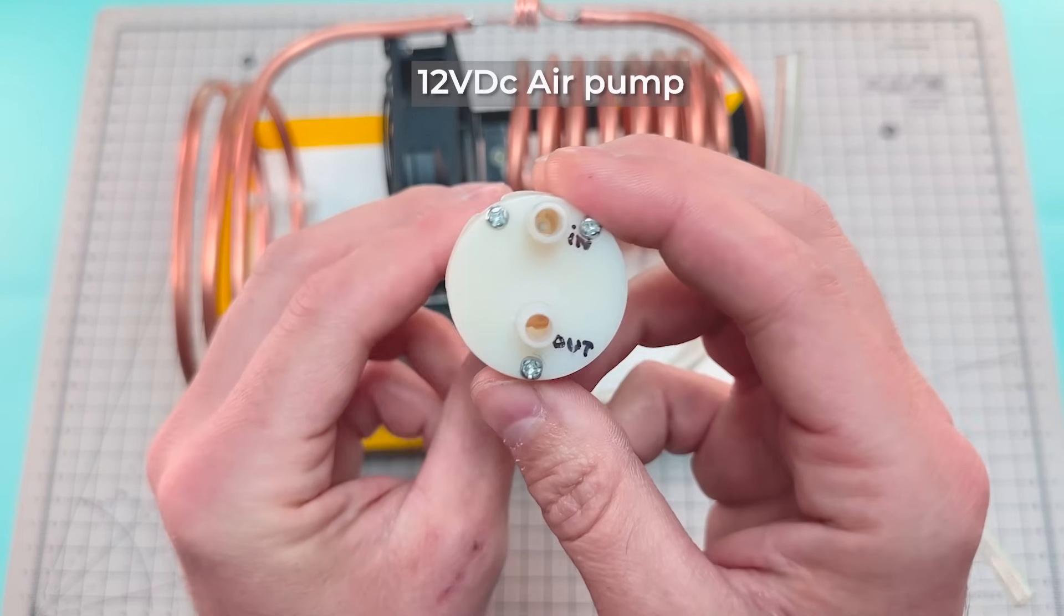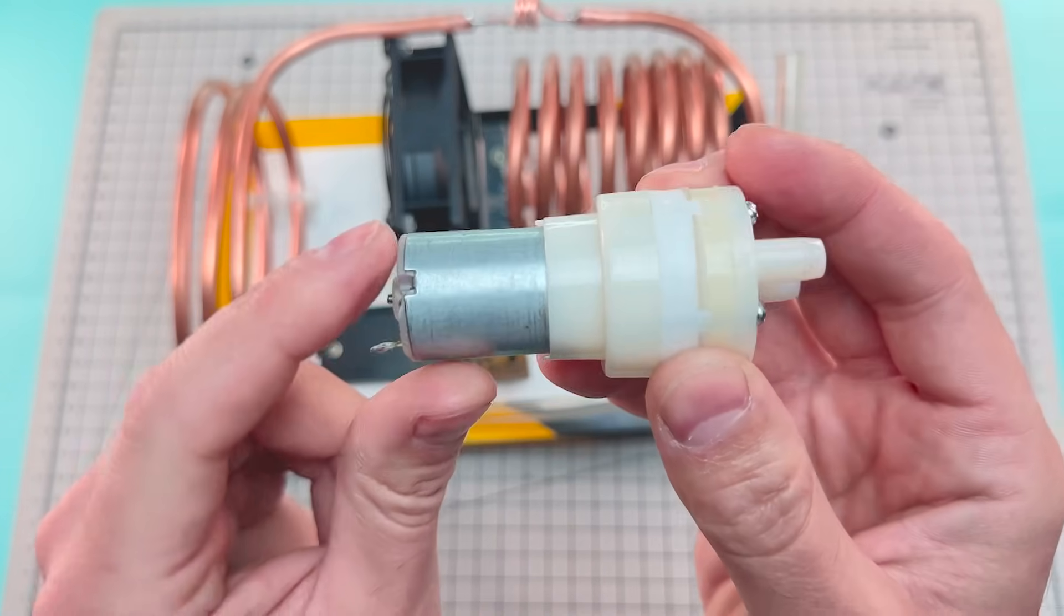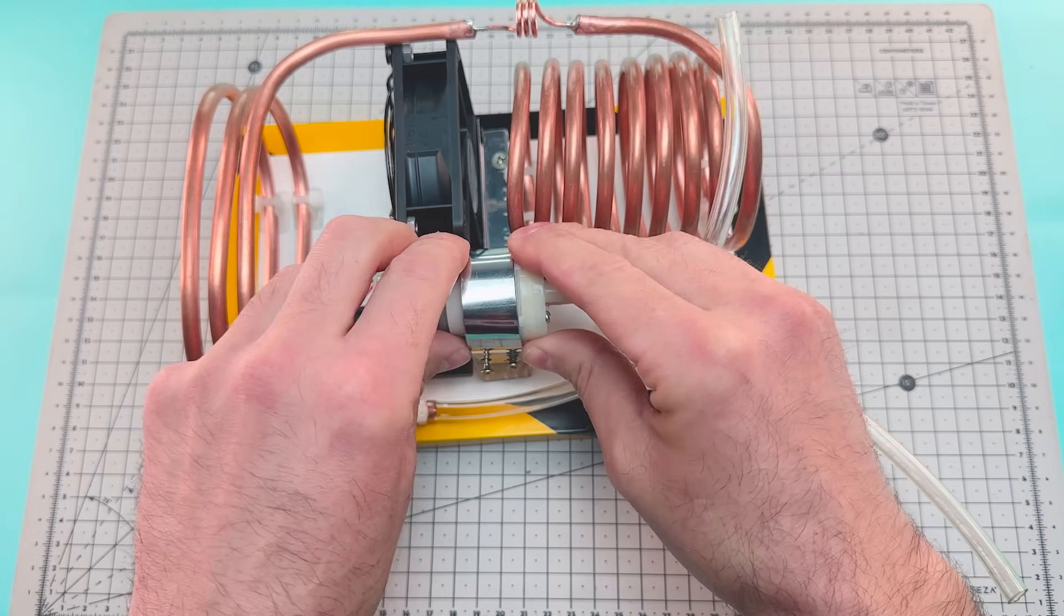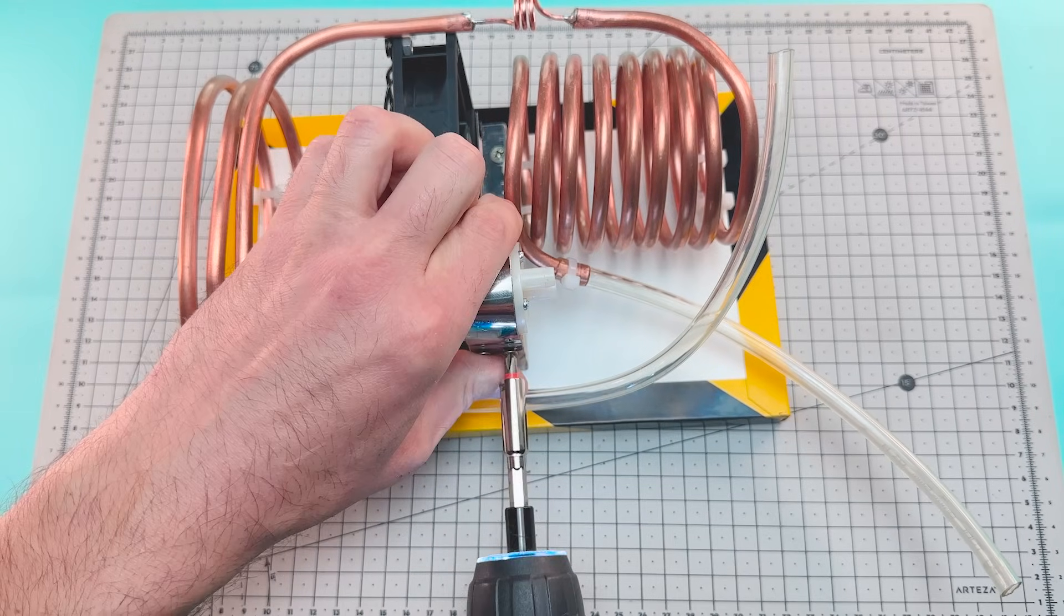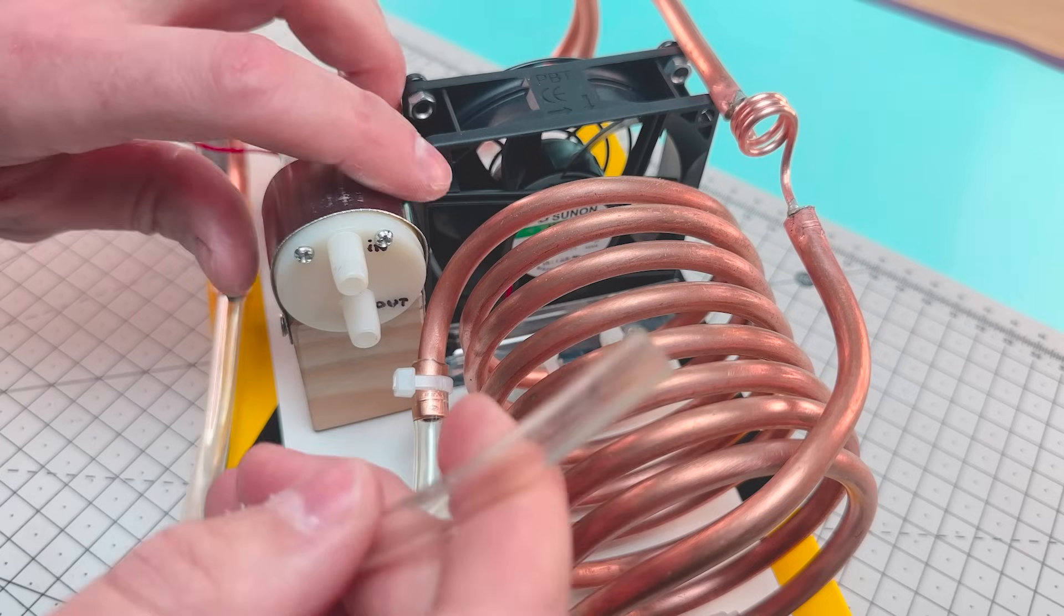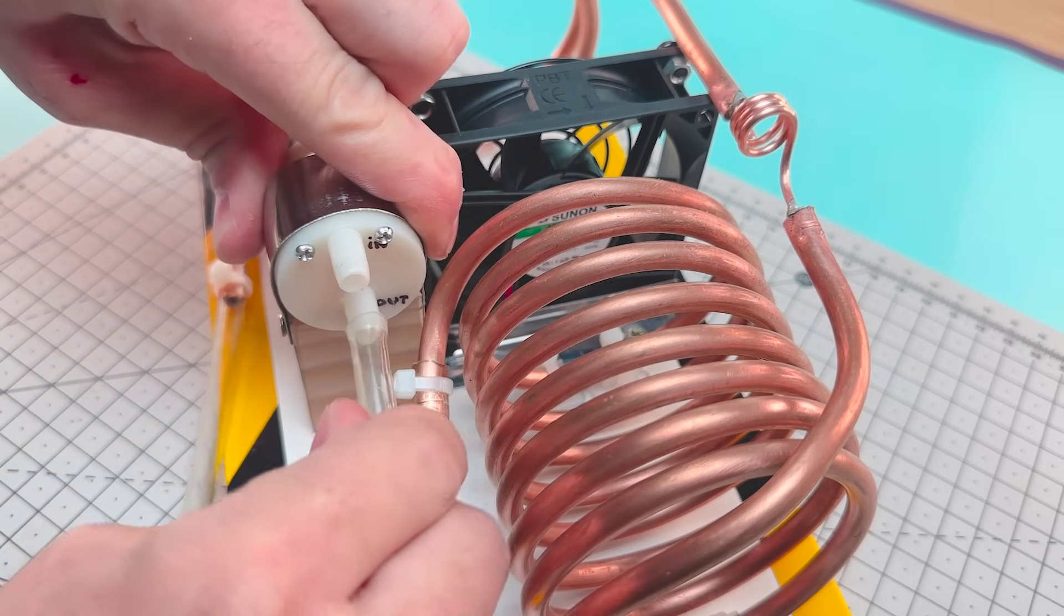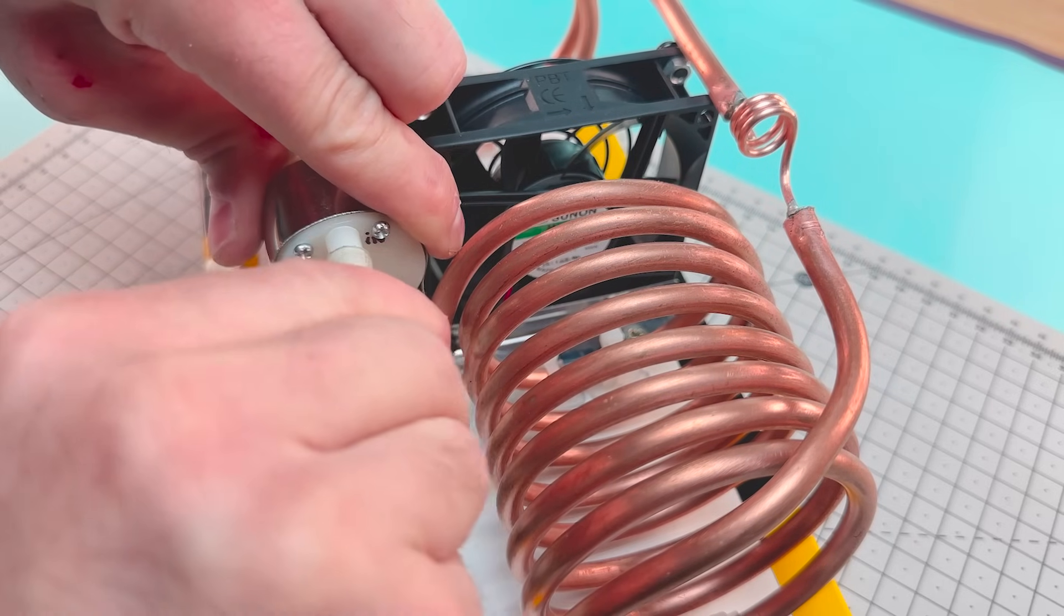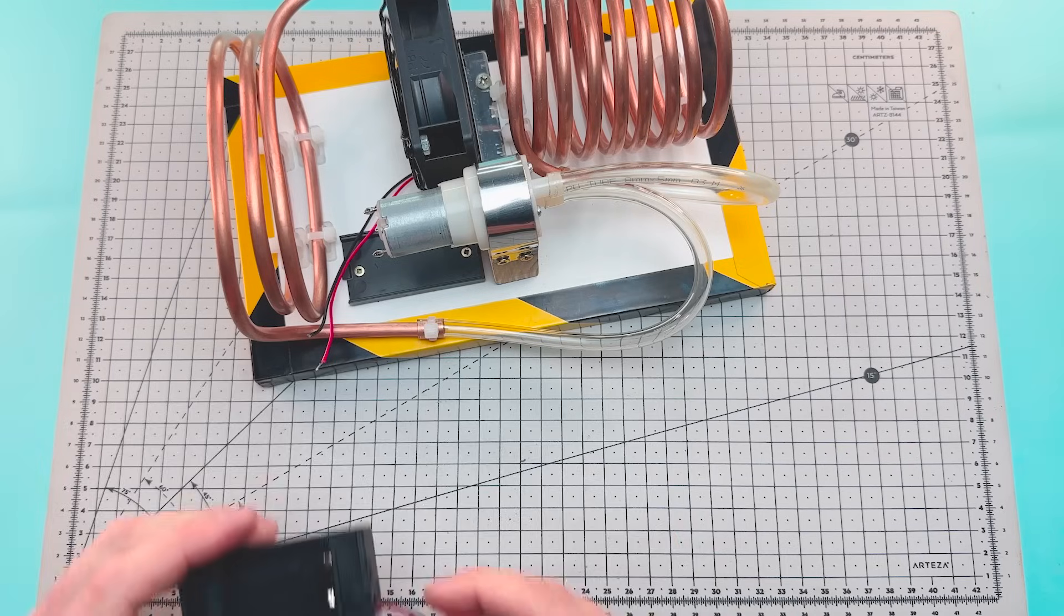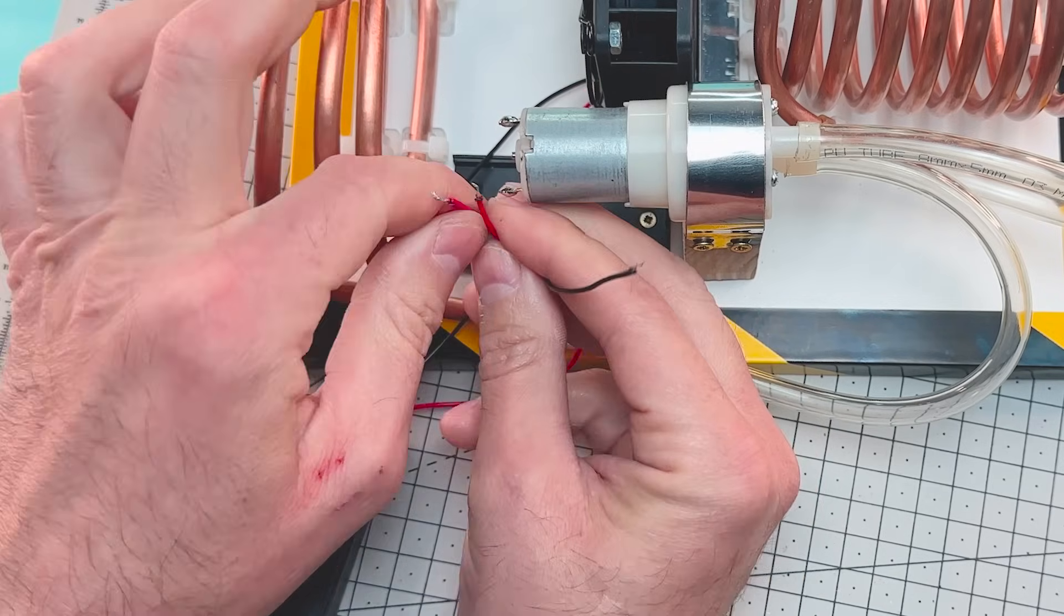Then we'll place a 12-volt air pump on the previously installed support. Now we connect the pump outlet to the condenser and the inlet to the evaporator. And we'll connect both the air pump and the fan to the battery mounted on the wooden base.